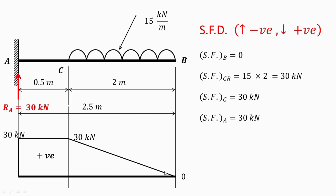At B the shear force is zero, then it gradually increases up to 30 at point C, and then remains the same up to point A. As this is the fixed end, there will be a reaction. All these forces are acting in the downward direction and are positive. The reaction produced by the support is 30 kilonewton in the upward direction, equal in magnitude to the shear force at A.